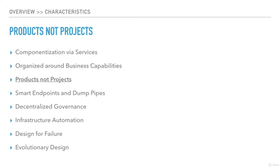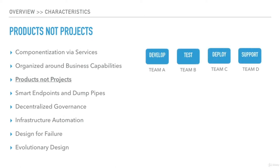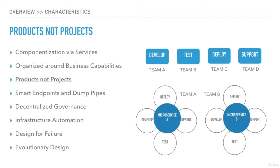So we did not modularize around technical boundaries — but what about the processes? A typical software lifecycle includes requirement analysis, design, development, testing, deployment, and support, which require multiple teams in traditional implementations. Microservices architecture suggests that all these functions should be carried out by one team. If there are n microservices, we should have n teams. Each microservice team should take care of the complete lifecycle of the service, including design, development, test, deployment, and support.